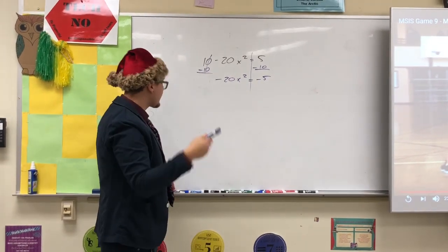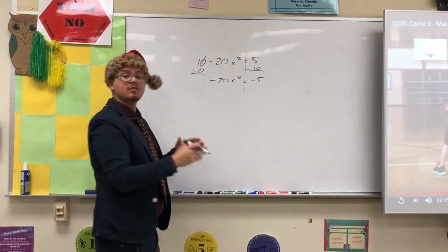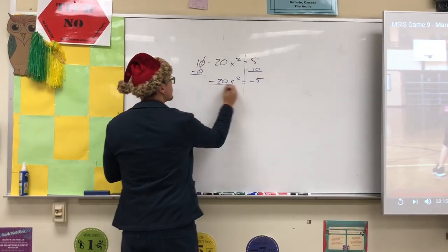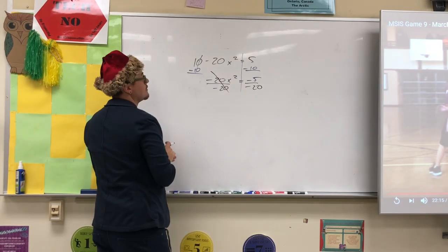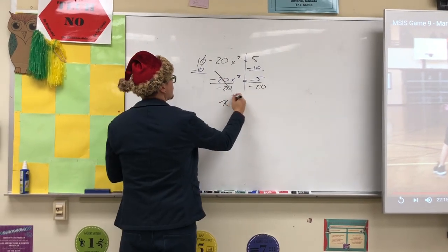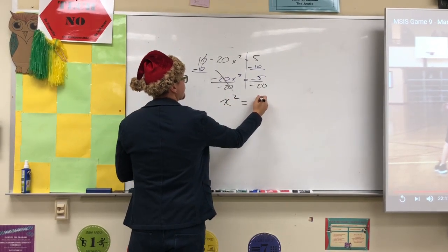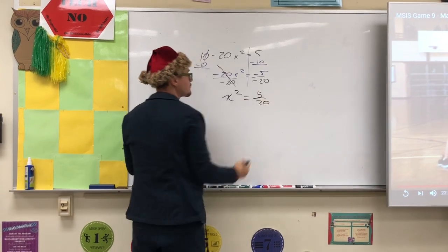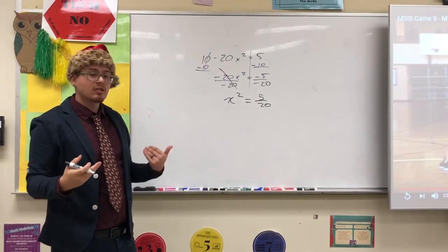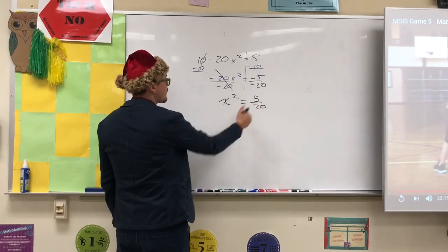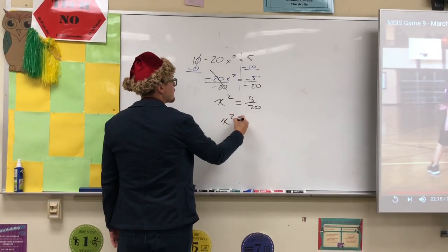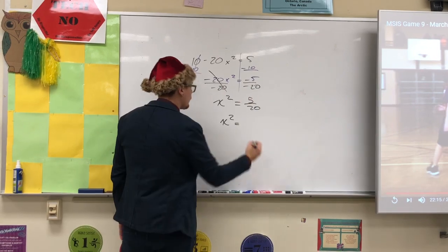You're almost ready to take the square root. First, you need to divide by negative 20. That's going to make x squared equals 5 over 20. Now, fractions, always reduce them when possible. This is a nice easy fraction to reduce, so we're really going to have x squared equals 1 fourth.